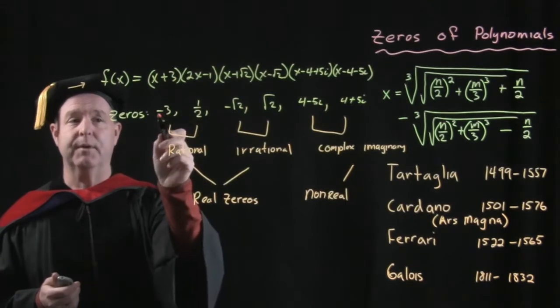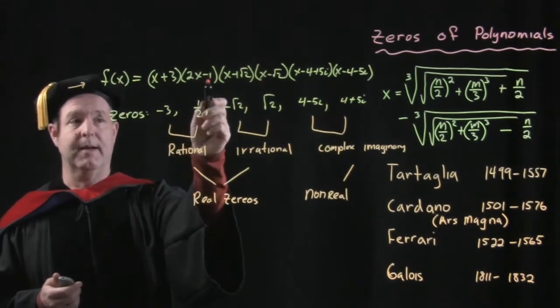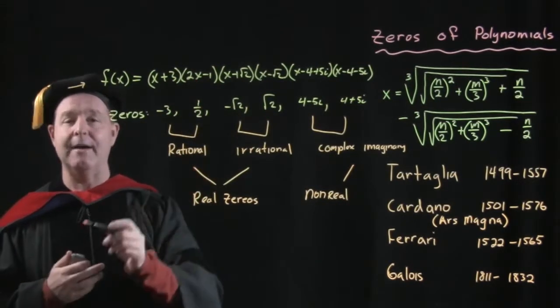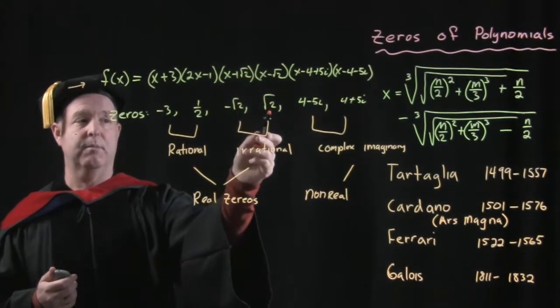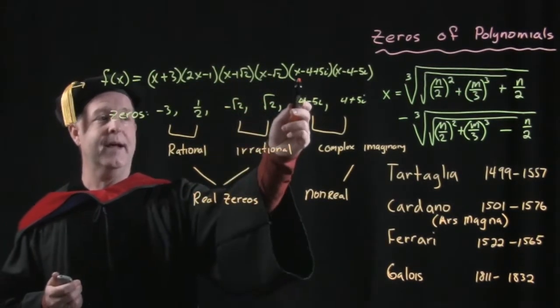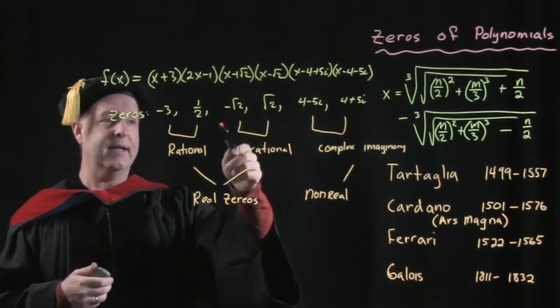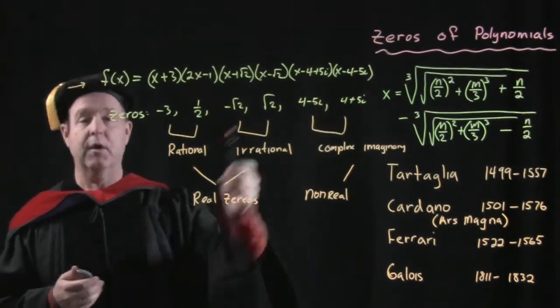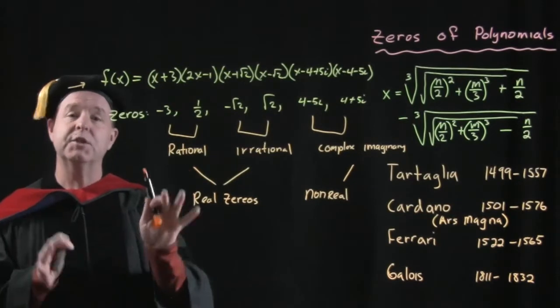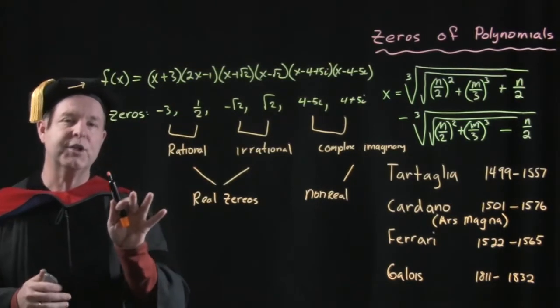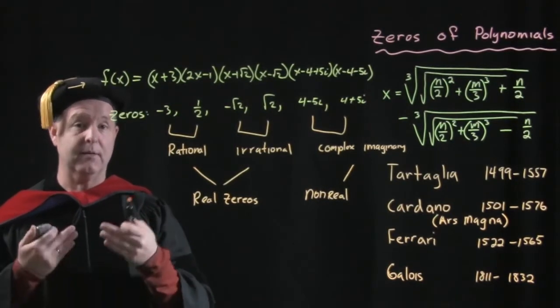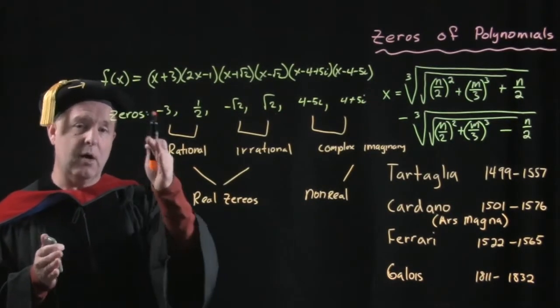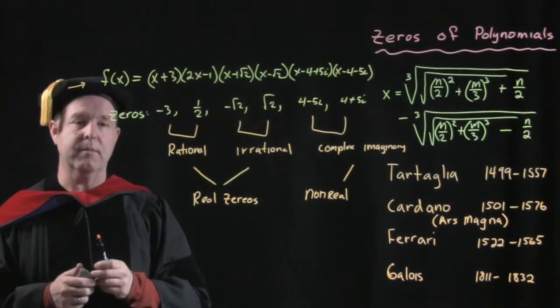And so x plus 3 produces a negative 3. 2x minus 1 produces a 1 half. x plus root 2, x minus root 2 produces plus or minus root 2. And then x minus 4 plus 5i and so forth produces those particular roots. Again, this is just an example, but what I want to show you is the kind of roots that we've been able to find and the kind of roots that we're going to be able to expect as we try to solve some of these extended polynomials.